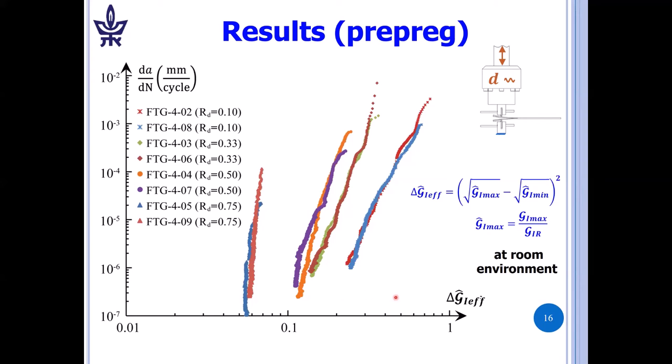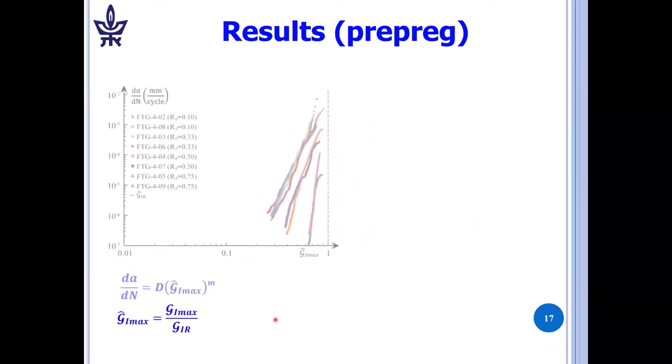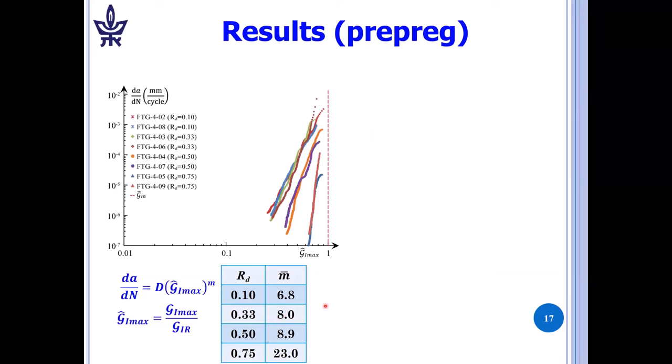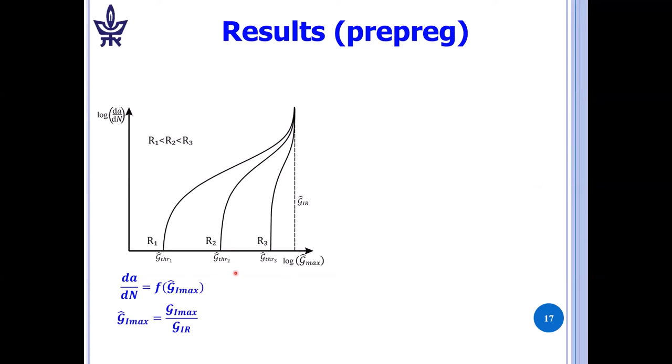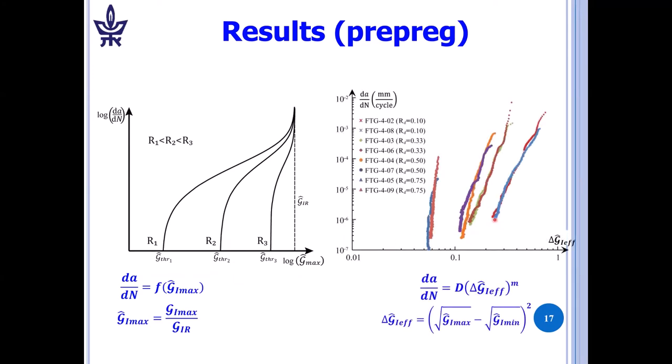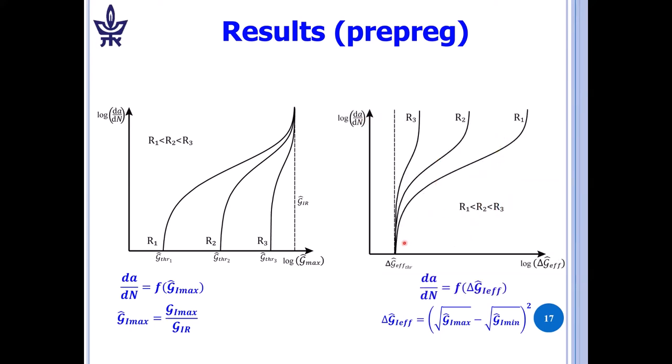If we plot da/dN versus delta G1 effective hat, then we get the reverse behavior. Here we have RD is equal to 0.1, RD is 0.33 and so on. If you would extend the data, you would reach a G1 threshold. So here are the values of M versus RD for G1max hat. This is the kind of behavior that schematically we are obtaining. And this is for delta G1 effective hat. Here are the summary of the M values, which are quite high. And this is the behavior. If we would extend those curves, this is the behavior that we're obtaining. This will allow us to find delta G1 effective threshold.